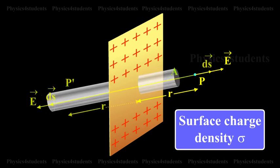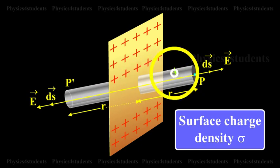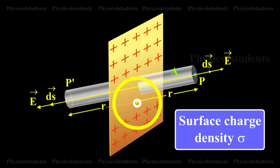Consider a Gaussian surface in the form of a cylinder of cross-sectional area A and length 2R perpendicular to the sheet of charge.